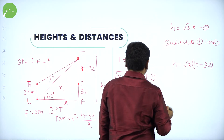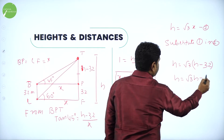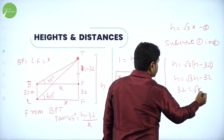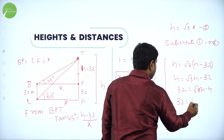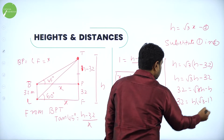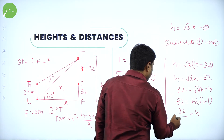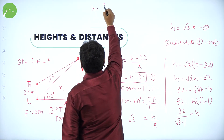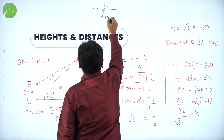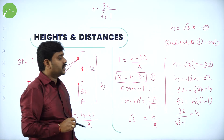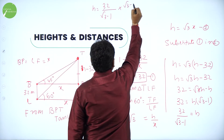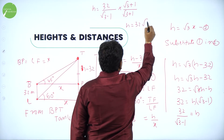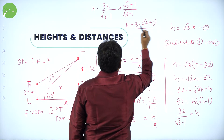Simplifying: H equals root 3 H minus 32 root 3. Bringing terms together: 32 root 3 equals root 3 H minus H, so 32 root 3 equals H(root 3 minus 1), giving H equals 32 root 3 divided by (root 3 minus 1). To rationalize, multiply numerator and denominator by (root 3 plus 1).